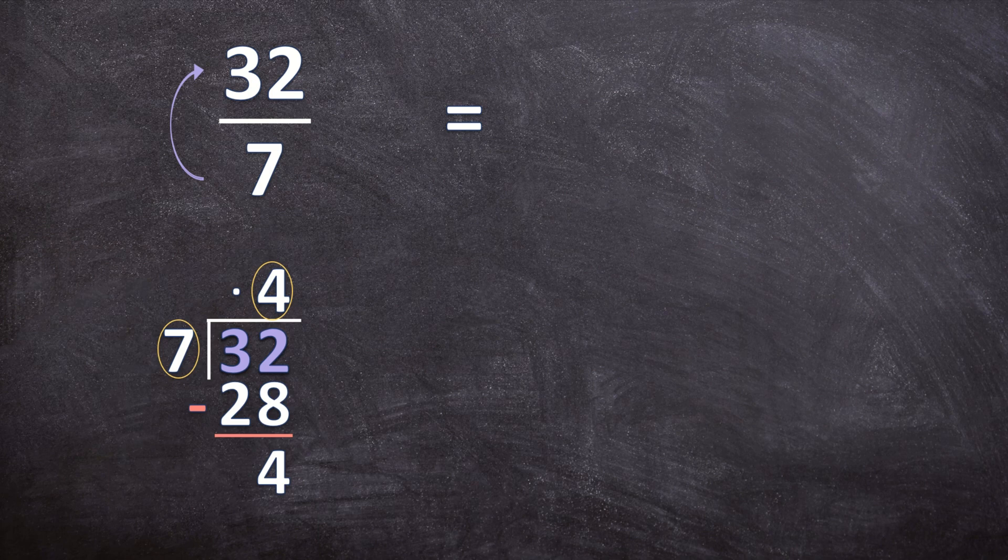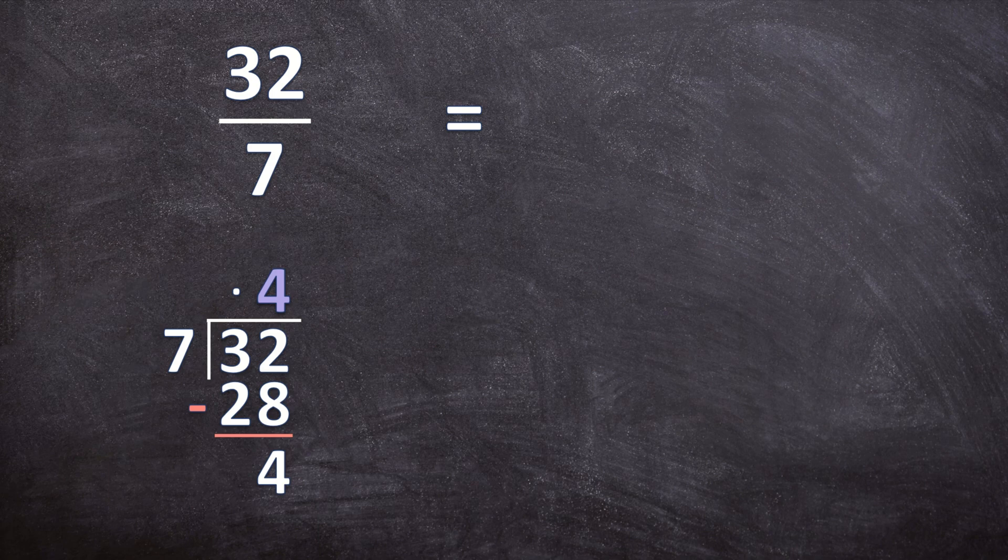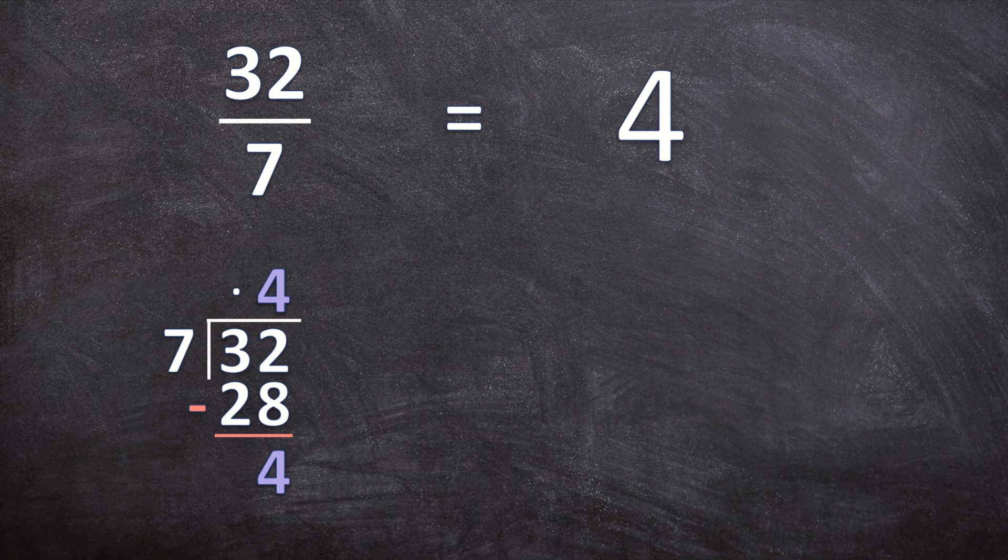So now we can write down our mixed number. How many whole 7s can you get out of 32? 4. So our whole number is 4. And what is our remainder? It is 4. So 4 out of 7 is left over.